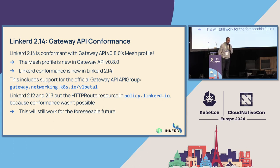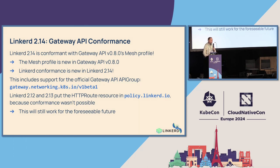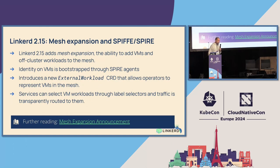On gateway API: our goal is a glorious YAML-based future where you use gateway API types to control every aspect of L7 traffic routing in your cluster. We achieved conformance in 2.14 — it's a moving target and we're going to keep up with it. Linkerd 2.12 introduced gateway API for authorization policy, 2.13 used those same types for request routing, and we're tracking that evolution.